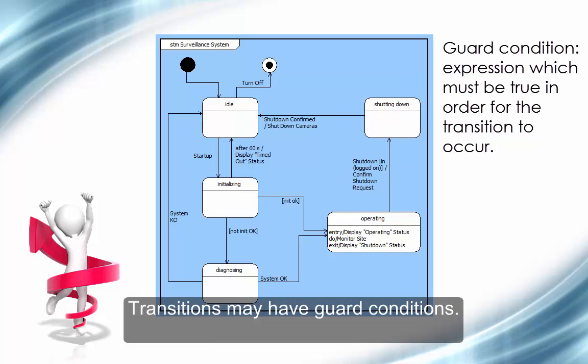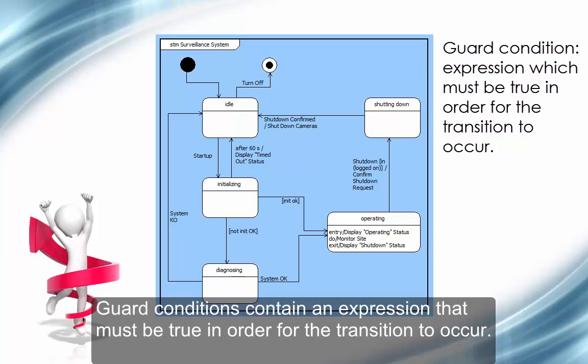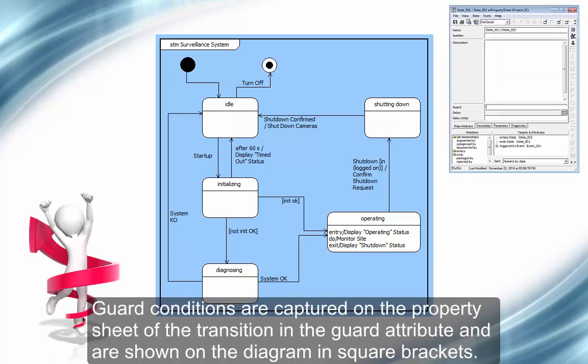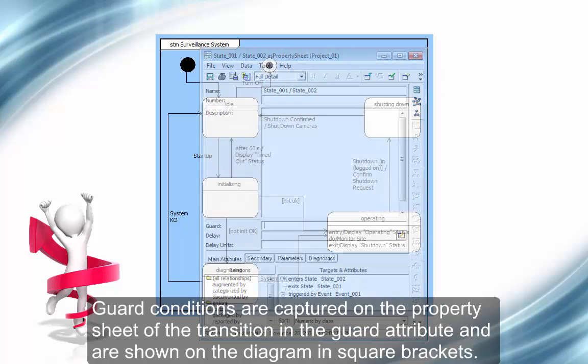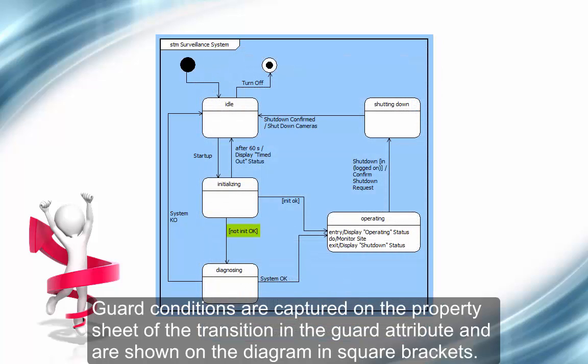Transitions may have guard conditions. Guard conditions contain an expression that must be true in order for a transition to occur. Guard conditions are captured on the property sheet of the transition in the guard attribute and are shown on the diagram in square brackets.